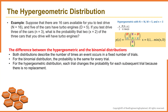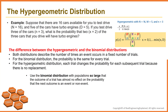The last topic I would like to talk about is the difference between the hypergeometric and the binomial distributions. Both describe the number of times an event occurs in a fixed number of trials. For the binomial distribution, the probability is the same for every trial. For the hypergeometric distribution, each trial changes the probability for each subsequent trial because there is no replacement. So use the binomial distribution with large populations where the outcome of the trial has almost no effect on the probability that the next outcome is an event or non-event.